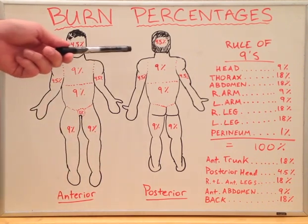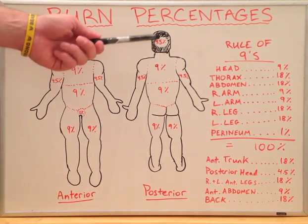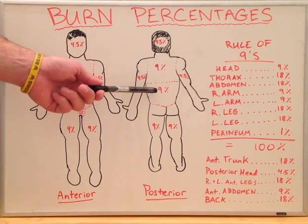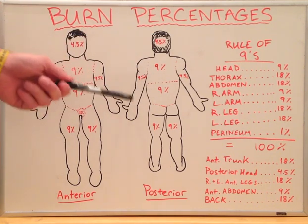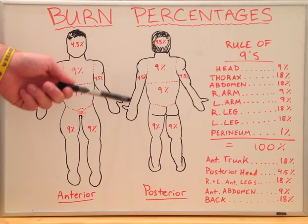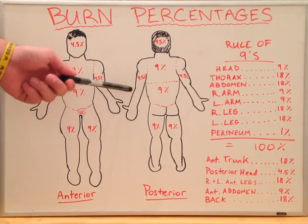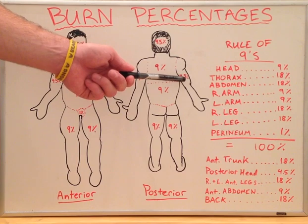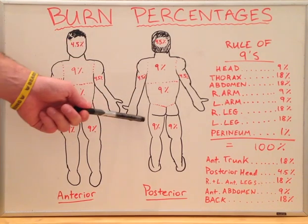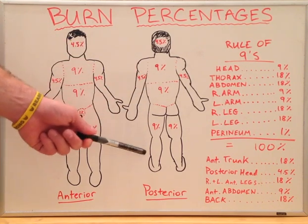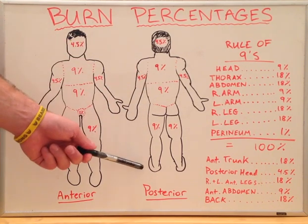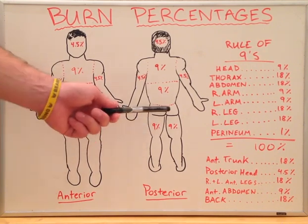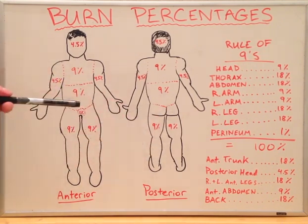On the posterior aspect, it is essentially the same: 4.5% for the head, 9% and 9% for the thorax and abdomen respectively. The forearm and hand for both left and right are 4.5% and 4.5%. And the thigh, buttocks, leg, and foot on both sides are 9% and 9%.